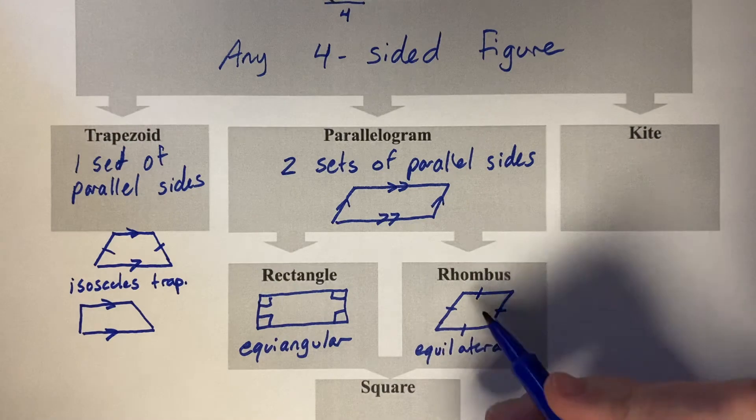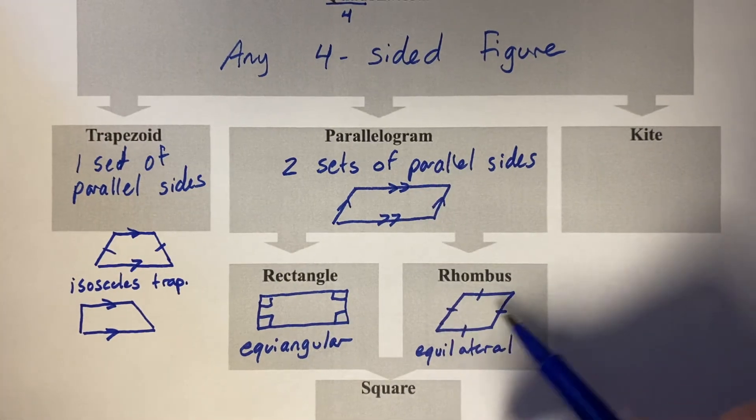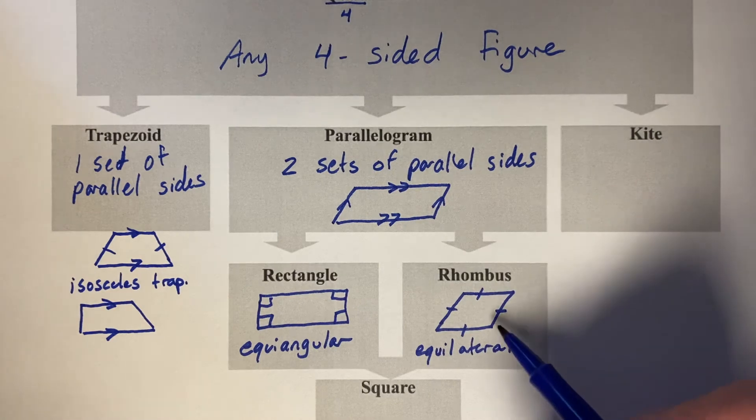It's an equilateral parallelogram. So rather than just being parallel, it's now the same length. So this is the knocked over square.